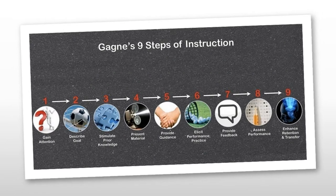Now we're going to look at Robert Gagné's nine events of instruction. They're based on a behaviorist approach to learning and are identified by the mental conditions needed for learning in adults.